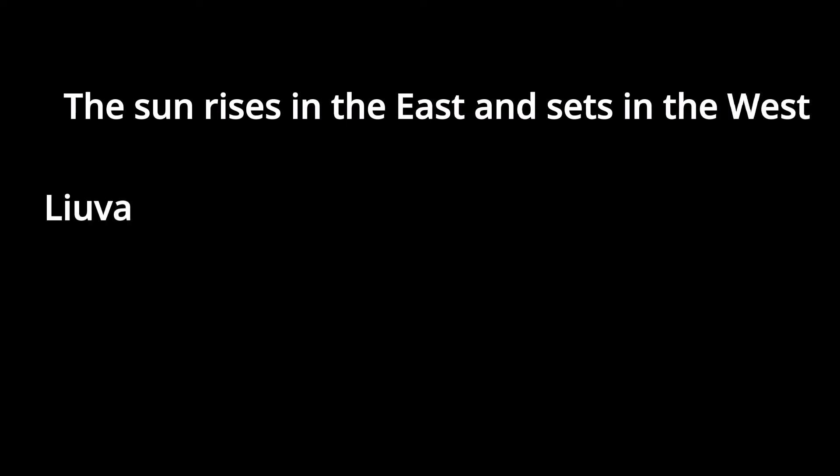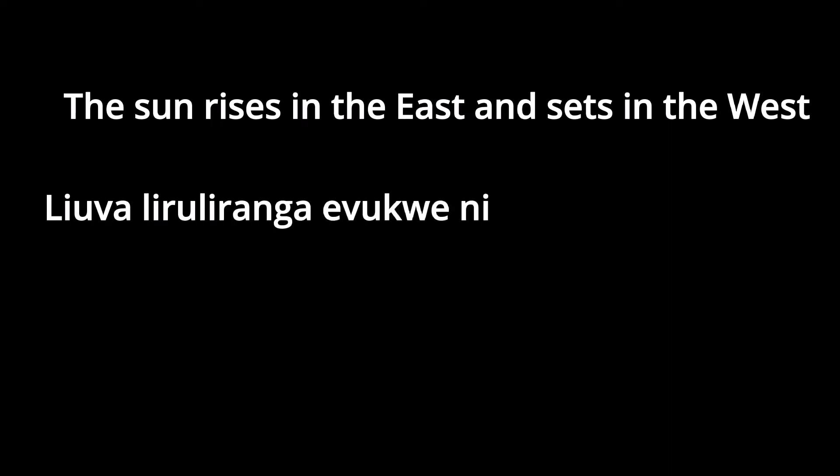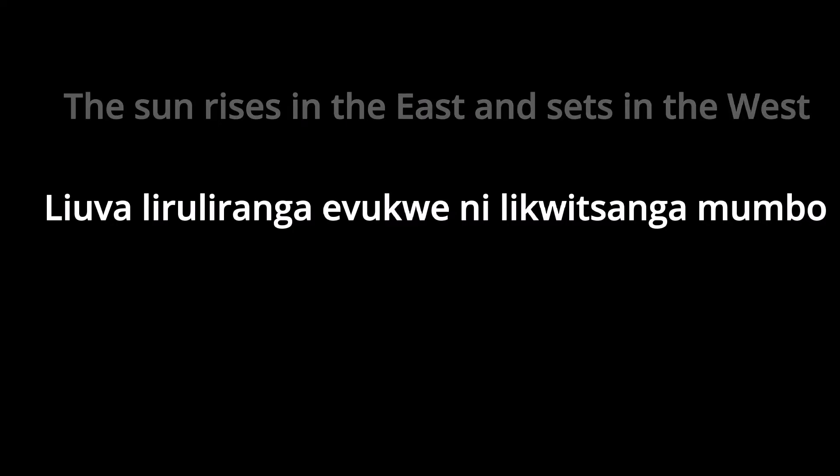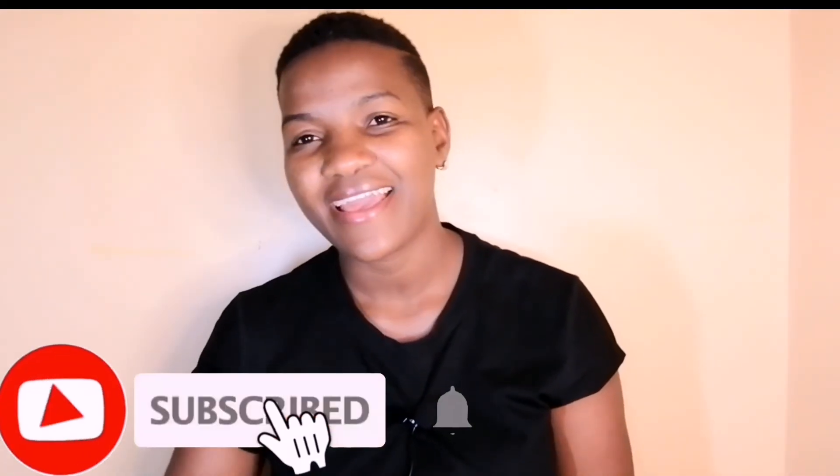Now let's put it in a sentence in the Luya language. 'Ryuva rirulanga evuque' — that means the sun rises in the east. 'Nirikuitanga mumbo' — it sets in the west. So: 'Ryuva rirulanga evuque, nirikuitanga mumbo' — the sun rises in the east and sets in the west.